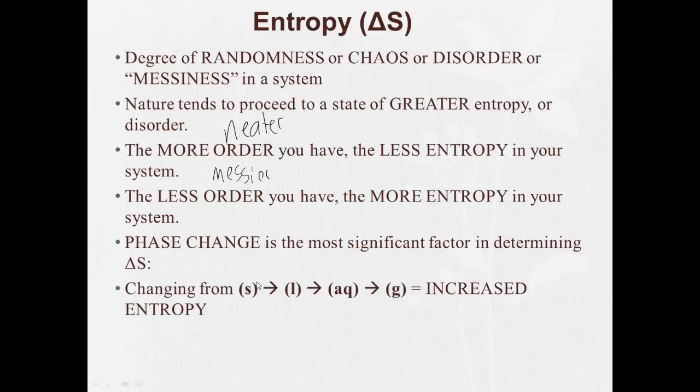The most ordered phase is solids. The least ordered phase we've studied is gases. Solids, everything's arranged nice and tight. Gases, very random, all over the place. Solids have the least entropy because they have the most order. Gases have the most entropy because they have the least disorder.